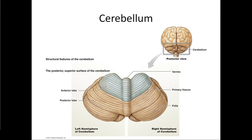Moving down from here, we reach the cerebellum. The cerebellum is important for posture, gait, and balance — a lot of the big control that you don't need to consciously think about. If you want to stand up and walk across the room, you're not carefully thinking about how to balance or move every muscle; you're just thinking 'I'm going to walk over there.' The posture, the balance, and the basic gait are being coordinated by the cerebellum.